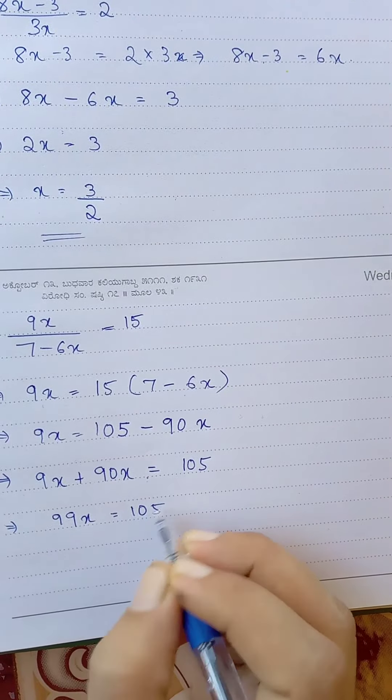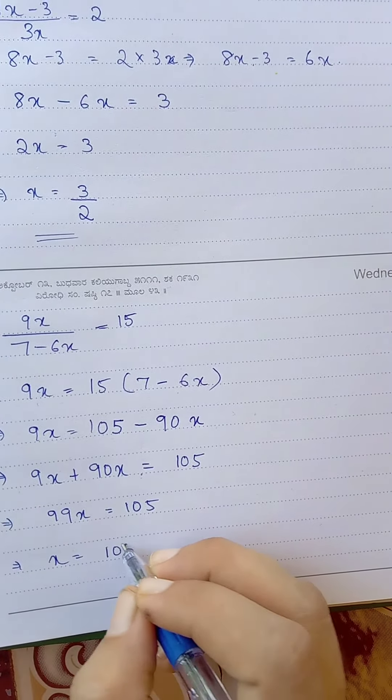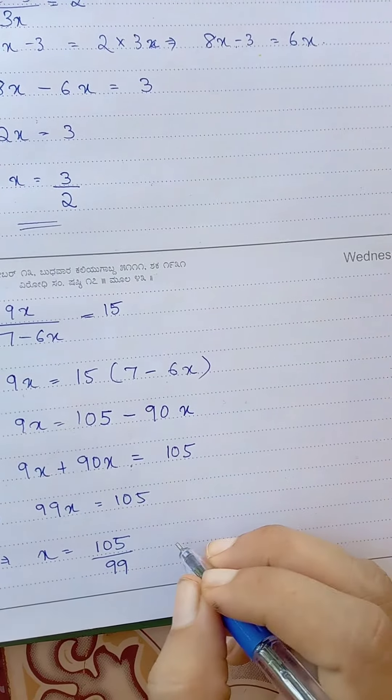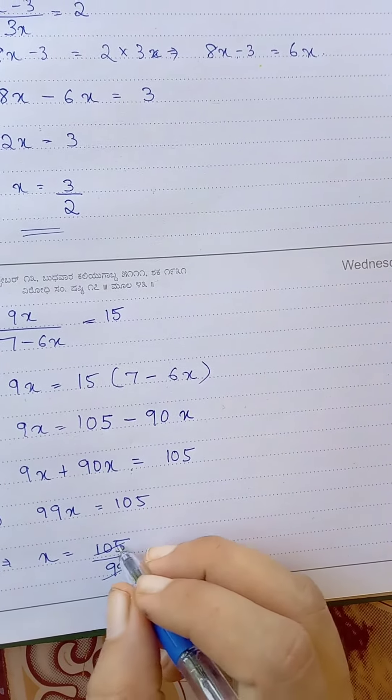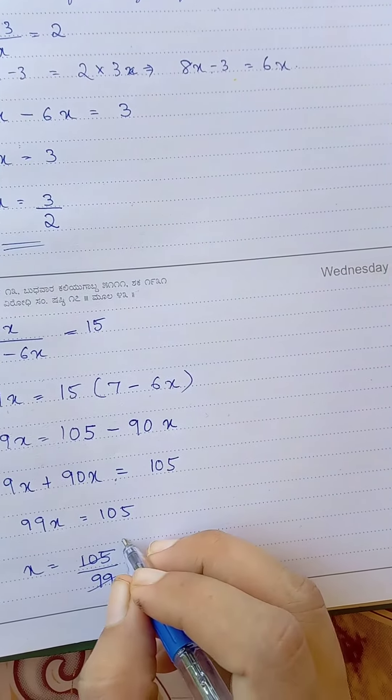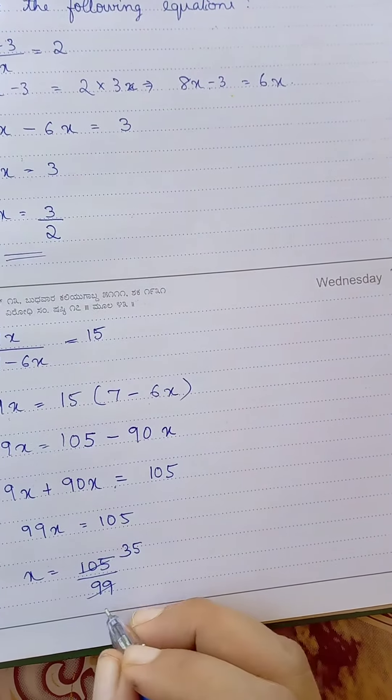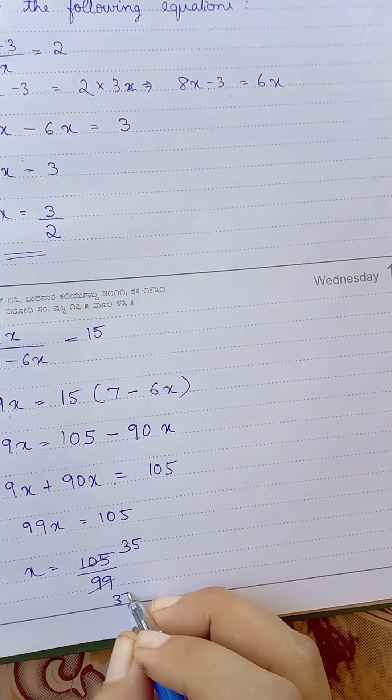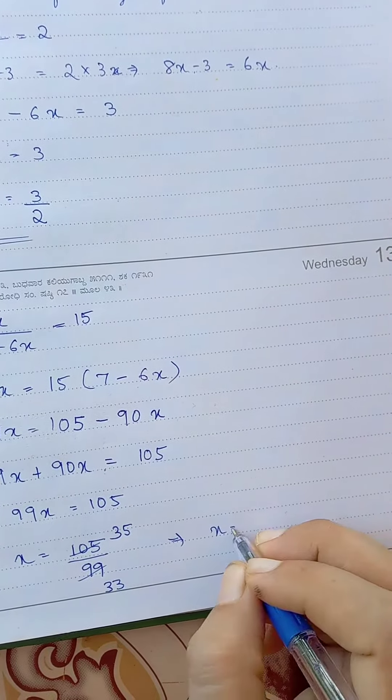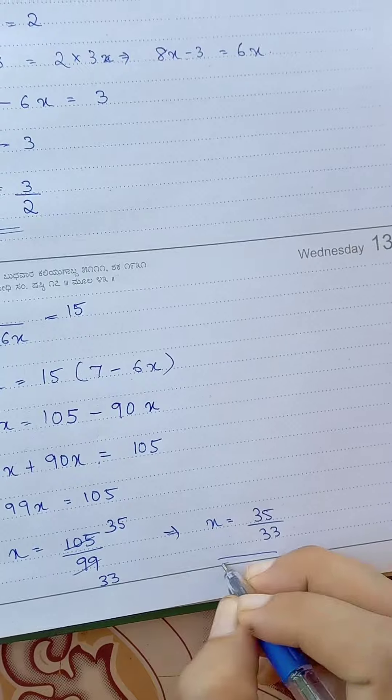So x equal to 105 divided by 99. You can divide by 3: 3 into 105 is 35 and 3 into 99 is 33, so x equal to 35 divided by 33.